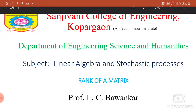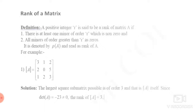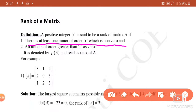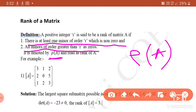The rank of a matrix is defined as: a positive integer R is said to be the rank of a matrix A if there is at least one minor of order R which is non-zero, and all minors of order greater than R are zero. It is denoted by rank of A.